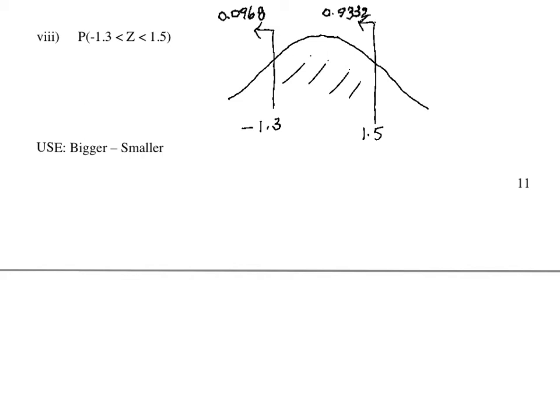We're going to take that off of the larger area at 1.5. So looking at the positive table, 1.5, the area to the left is 0.9332.